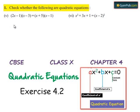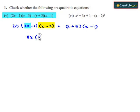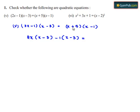Coming to the fifth bit: (2x - 1)(x - 3) = (x + 5)(x - 1). On the left hand side we have (2x - 1)(x - 3), which can be written as 2x(x - 3) minus 1(x - 3). On the right hand side we have (x + 5)(x - 1), which can be written as x(x - 1) plus 5(x - 1).